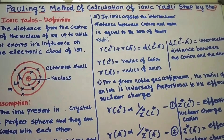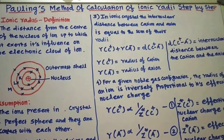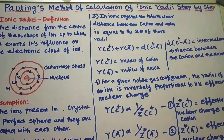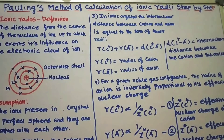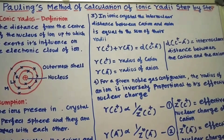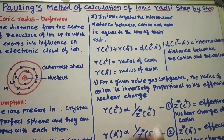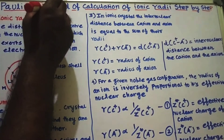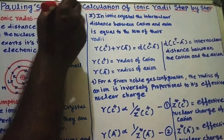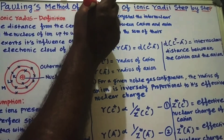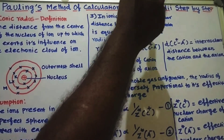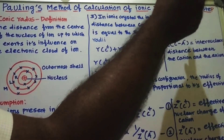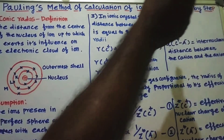Good morning students. Today we are going to discuss an important topic in chemistry: Pauling's method of calculation of ionic radii, step by step.